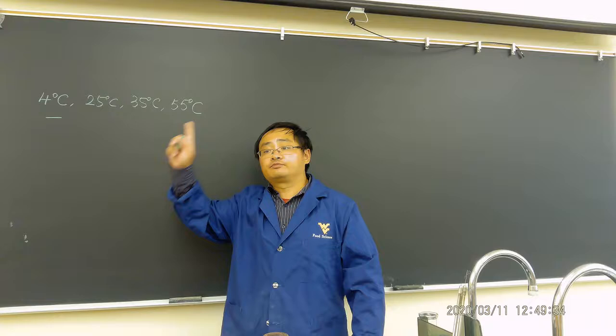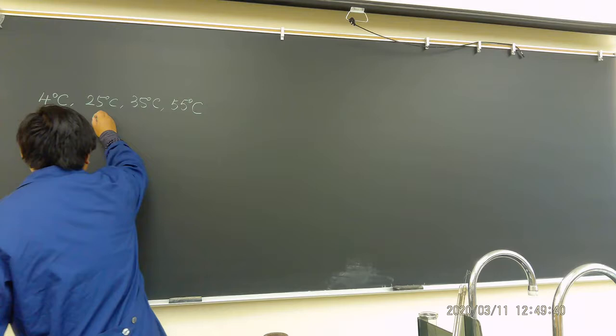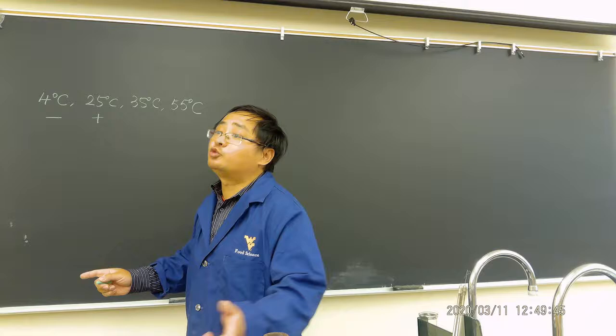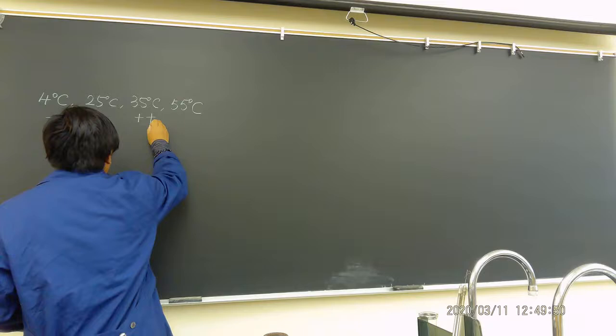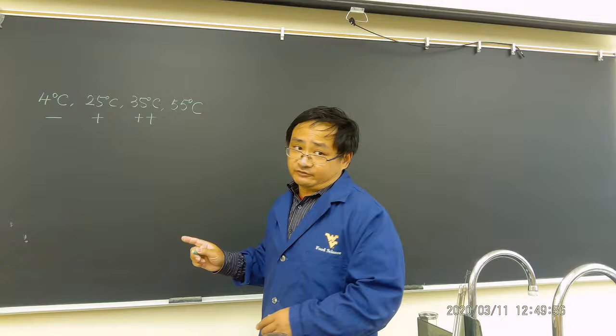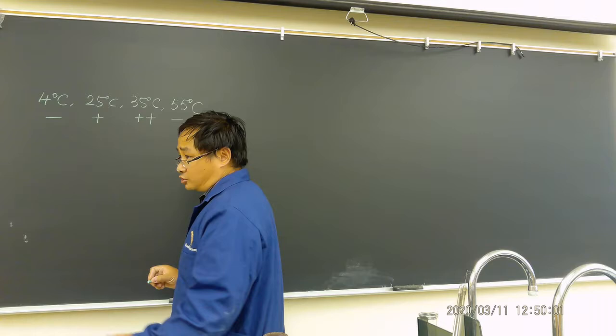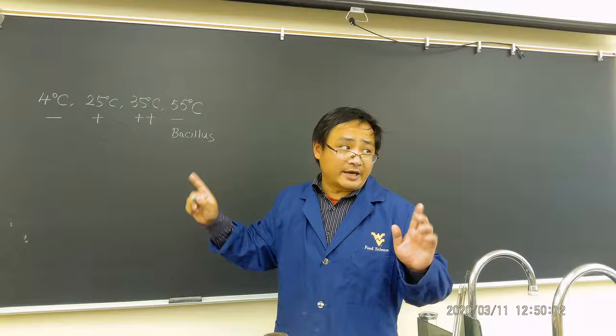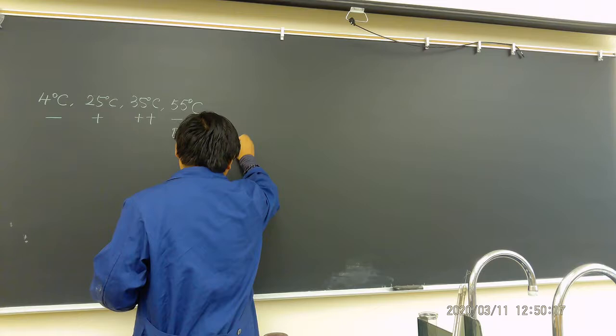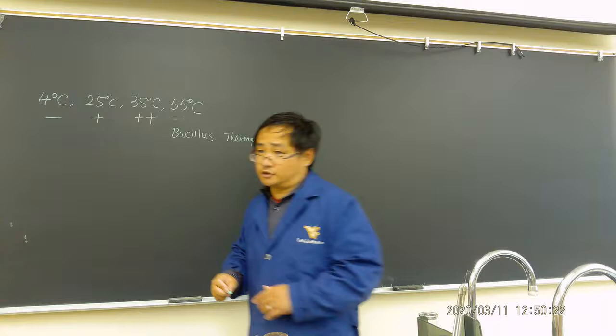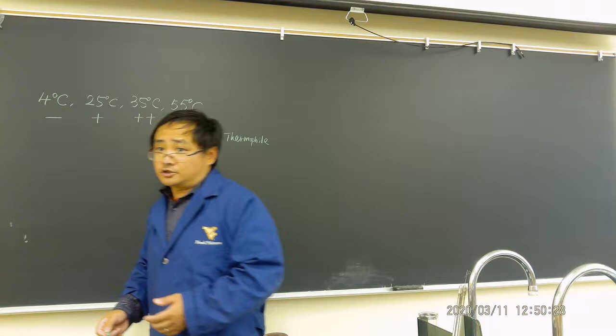At 25 degrees Celsius, you should see all of them growing. Ideally 25 should show only a little growth, but because it's been there for a week, it should look the same as 35 — they all grow very well. At 55 degrees, most should not grow. The only one growing is Bacillus, because Bacillus is a thermophile.